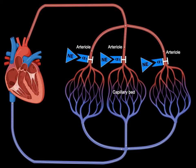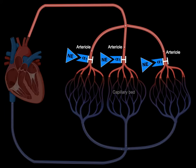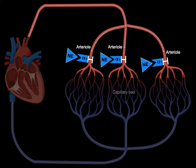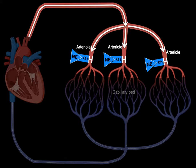Looking at a circulatory system schematic focused on the arteriole that feeds capillary beds — the arterioles have alpha-adrenergic receptors on their smooth muscle. When norepinephrine binds and you stimulate the alpha-1 receptors in those arterioles, it increases blood pressure and increases total peripheral resistance.